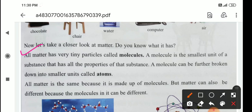So what is the smallest unit of a substance? Children that is molecule. A molecule can be further broken down into smaller units called atoms. So first atoms are joined then molecule forms. Then molecules are joined then substance formed.